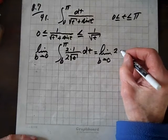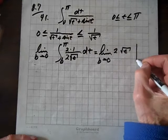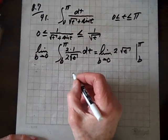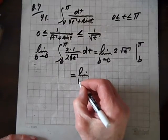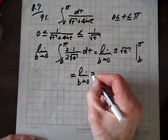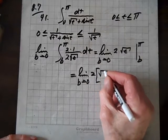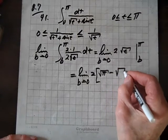2 times root t from b to pi. And so this equals the limit as b goes to 0 of 2 times root of pi minus root of b.